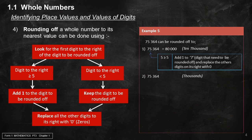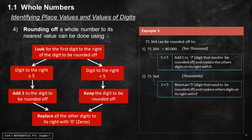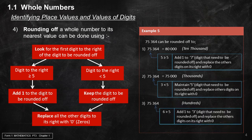Rounding 75,364 to the nearest thousands: the place value of thousands is digit 5. The digit to the right of 5 is 3. Because 3 is smaller than 5, we maintain digit 5, and replace all other digits to its right with 0. The answer is 75,000. To the nearest hundreds: the place value is digit 3, and the digit to its right is 6. Because 6 is bigger than 5, we add 1 to digit 3 and replace digits to its right with 0. The answer is 75,400.